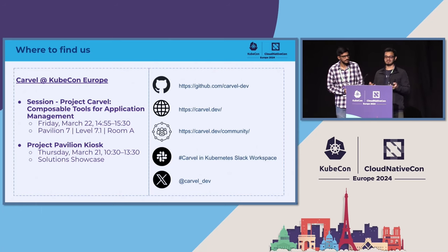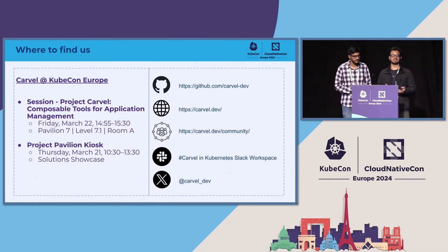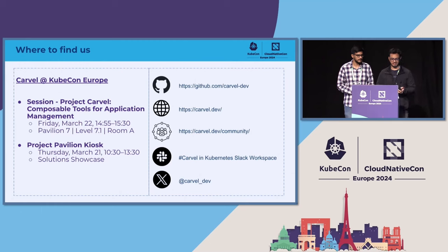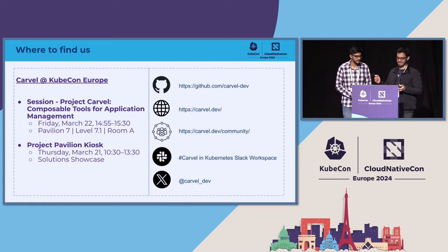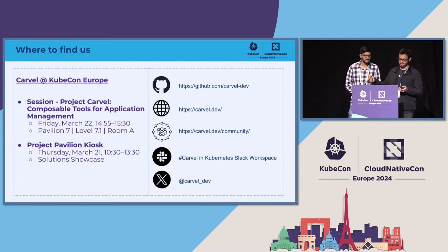After this, the most important bit is how all of this stitches together in the form of packaging APIs. However, we're limited on time, so we're going to share where you can find us over the next few days. We're happy to catch you in the hallway — you can reach out to us via our socials, and we are very active on the Kubernetes Slack workspace.